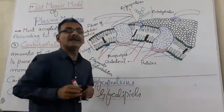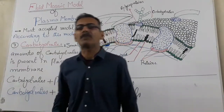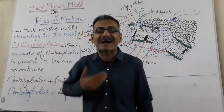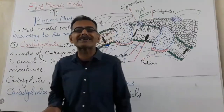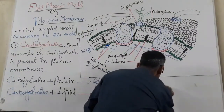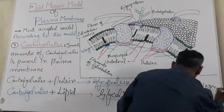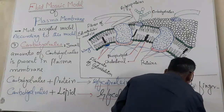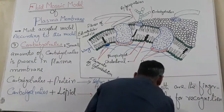These glycoproteins and glycolipids are very important compounds — they are the fingerprints of the cell. We can recognize cells by observing the types of glycoproteins and glycolipids. Both are the fingerprints for recognition of the cell.